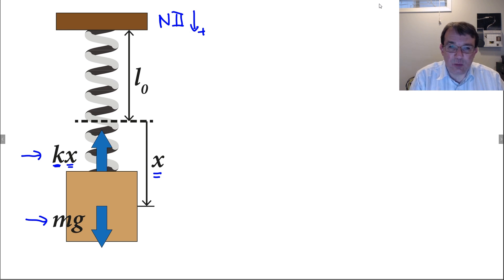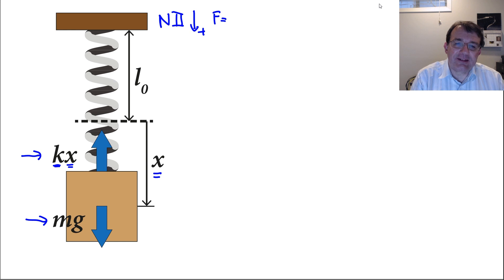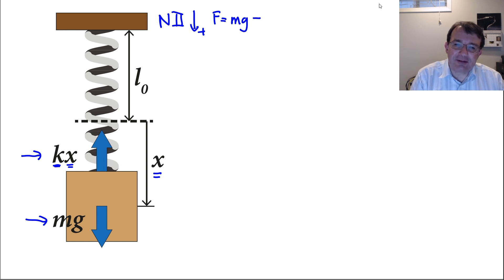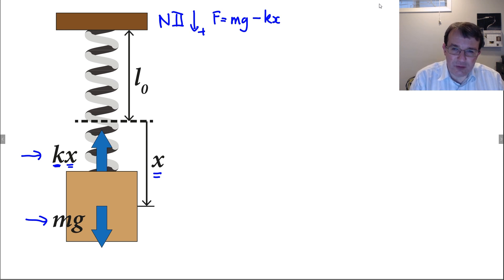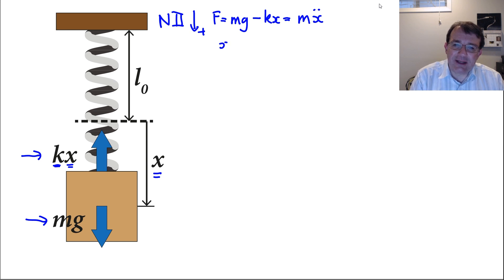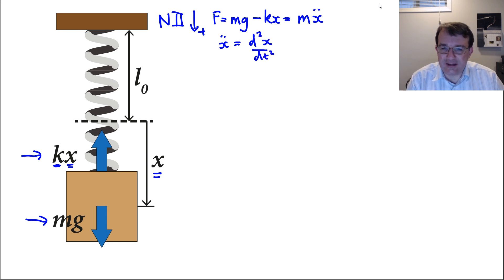Now we've got the forces, we apply Newton's second law. It's good practice to put an arrow with a plus sign to indicate the positive direction, and I've chosen downwards as positive. The net force F acting on the mass is the weight Mg — positive because it acts downwards — minus K times X for the spring force, which acts upwards. That equals M times Ẍ, the mass times acceleration, where Ẍ is D²X/dt² in Leibniz notation.